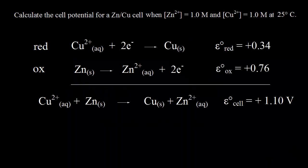You can use the Nernst equation to calculate cell potentials. Here we need to calculate the cell potential for a zinc-copper cell, where the concentration of zinc two-plus ions and the concentration of copper two-plus ions in solution is one molar, and we're at 25 degrees C. So we're talking about standard conditions here.